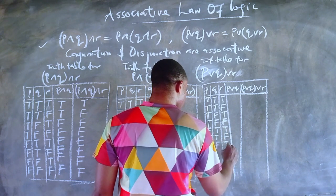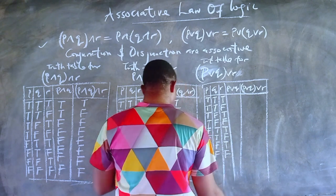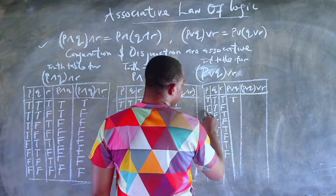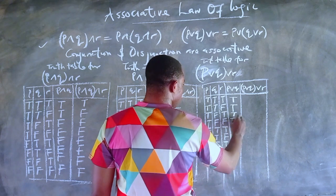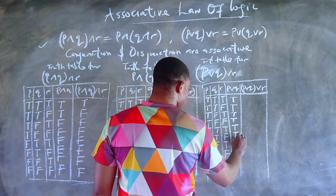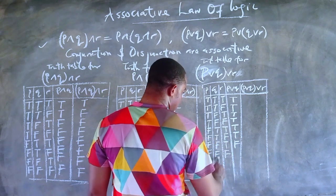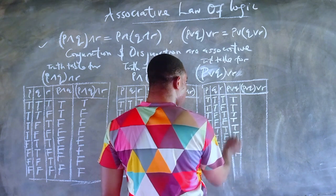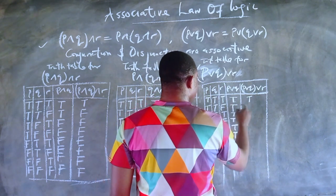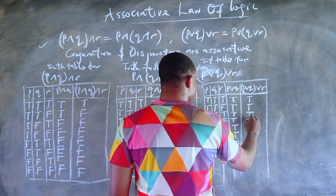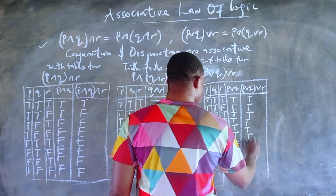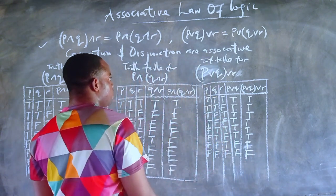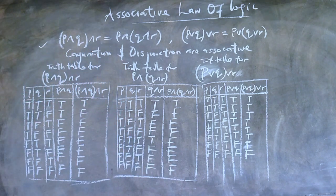We put down all eight possible conditions. The next column is an or statement — a disjunction. For P or Q: if one statement is true, the truth value is true. False or True is True; False or False is False. We then use the P or Q column together with R — as long as one statement is true, the truth value is true. Only the last two rows where both statements are False give a False result.